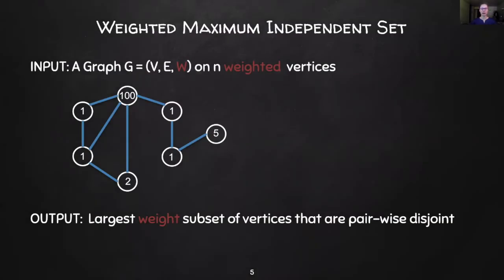Let's consider a natural generalization of this problem, where each vertex now has a non-negative weight associated with it. The goal is then to find the largest weighted independent set. Observe, for a fixed graph topology, the weighting might drastically change the maximum independent set, as evidenced by the above example.